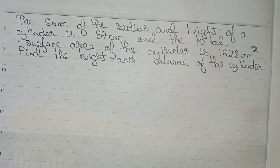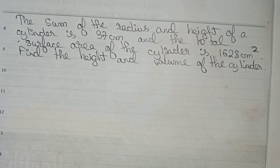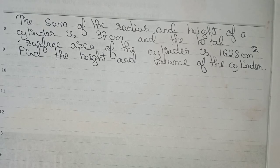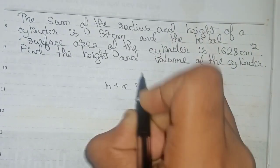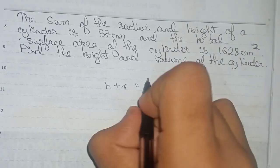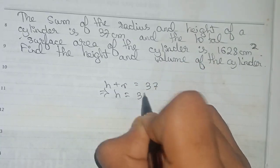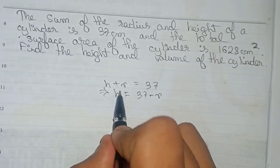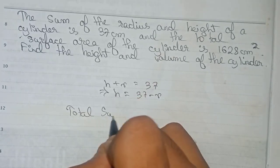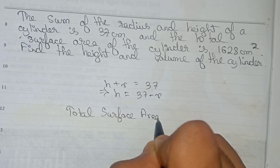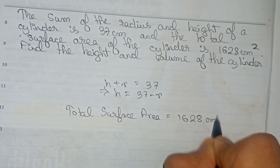Hello guys, welcome to this video. The question is: the sum of the radius and height of a cylinder is 37 centimeters, and the total surface area of the cylinder is 1628 centimeter square. Find the height and volume of the cylinder. From the question it is clear that h plus r is equal to 37, so rearranging: h is equal to 37 minus r.